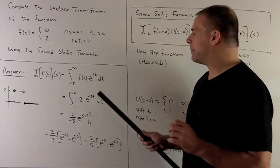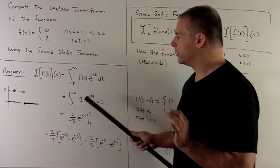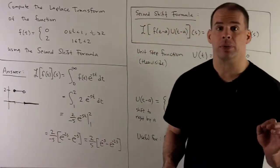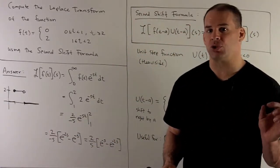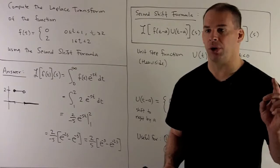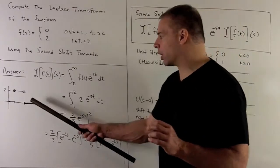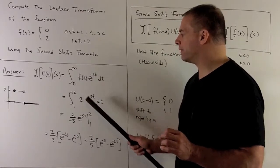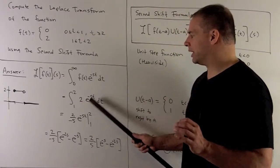Now, when I multiply by e to the minus st, you'll note wherever we're 0, we're going to stay 0. So our range of integration is really going to be from 1 to 2. We're going to be 0 everywhere else. So when we put in our f of t, from 1 to 2 the function is going to be equal to 2. Then we have our e to the minus st.